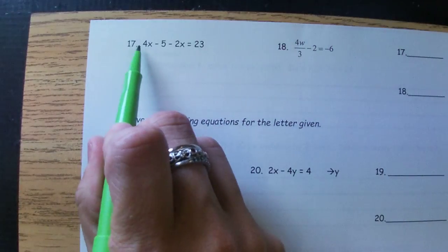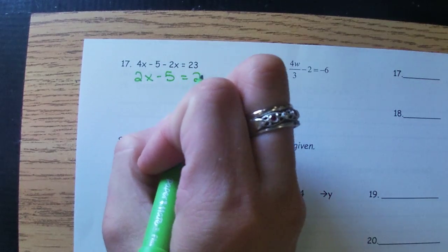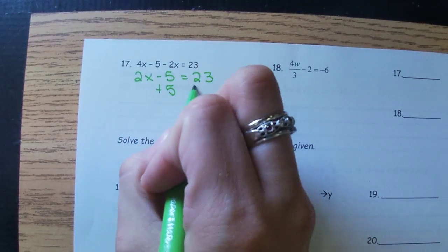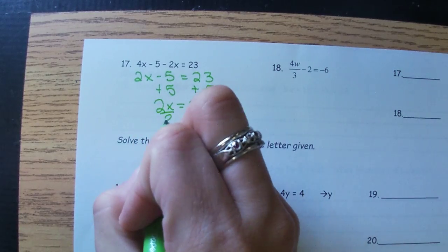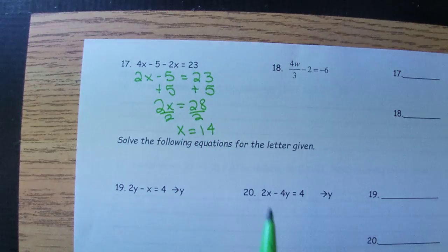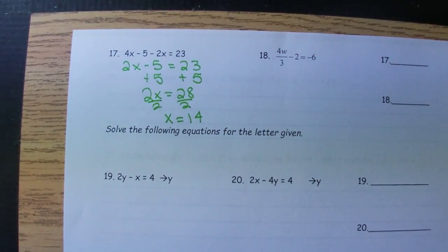At number 17, the variables are on the same side, so we get those together with the same sign and we just combine like terms. X equals 14.